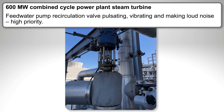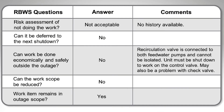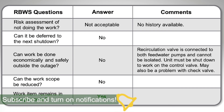Work order number two: same plant, 600-megawatt combined cycle power plant steam turbine. In this case it's the feed water pump recirculation valve — it's pulsating, vibrating, and making a lot of noise; high priority. Risk assessment of not doing the work: not acceptable, with no history available in this case. Can it be deferred to the next shutdown? No — we really think this is a problem. Can the work be done economically and safely outside the outage? No — the recirculation valve is connected to both feed water pumps and cannot be isolated; the unit must be shut down to work on the control valve. There may also be a problem with a check valve. Can the work scope be reduced? No. Does the work remain in outage scope? Yes. That's an example of simple questions to help determine what should be included in your shutdown or turnaround.